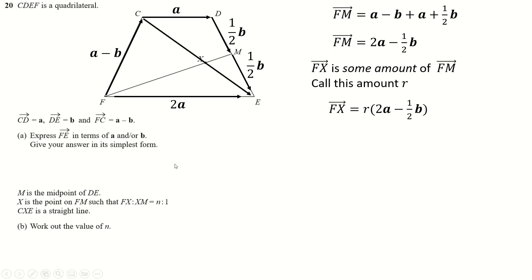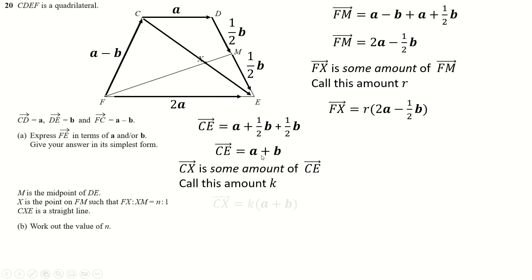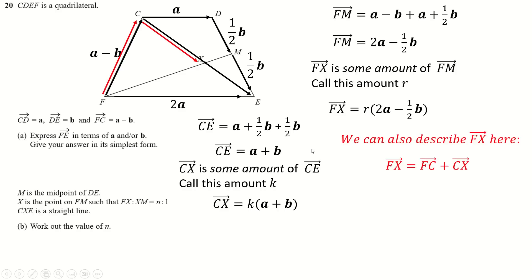It tells me C to X is a straight line, so I can find C to E, which is A plus B. And exactly the same trick says C to X is some amount K of (A plus B). Now I find two journeys for F to X. I already have one: R times (A minus half B). The other is going via C: F to C is A minus B, plus C to X which is K(A + B). Setting those equal gives me two expressions for F to X that must be equal.